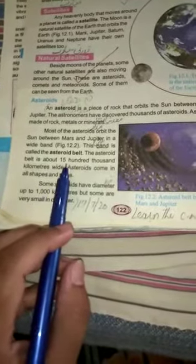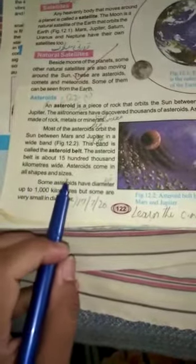This band is called the asteroid belt. The asteroid belt is about 150,000 km wide. Asteroids come in all shapes and sizes. Some asteroids have large diameters, some are very small in diameter.